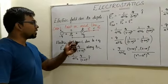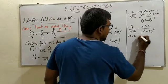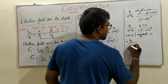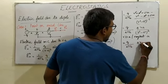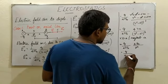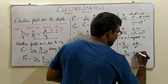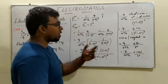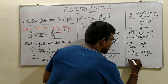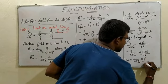Looking at the diagram, we can see that the point C is far from the dipole, so r is much greater than a, and we can neglect a. Neglecting a, we get q/(4πε₀) · 4ra / r⁴. This simplifies to (1/4πε₀) · 2(2qa)/r³. Since 2qa is the electric dipole moment p, the total electric field on the axial point becomes E = (1/4πε₀) · 2p/r³.